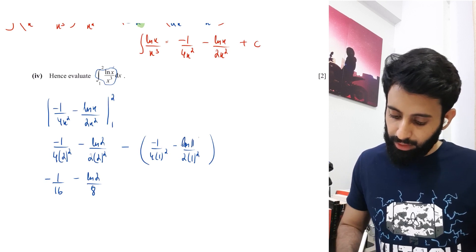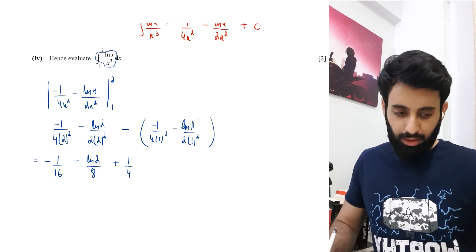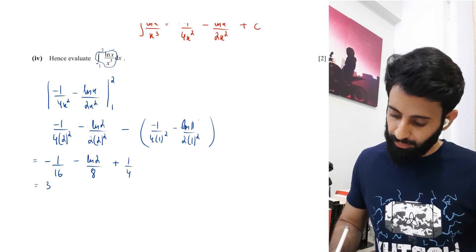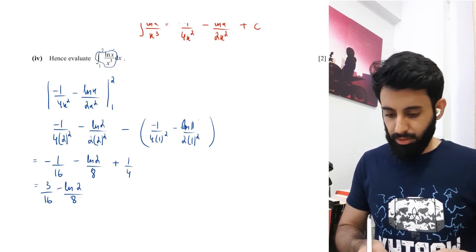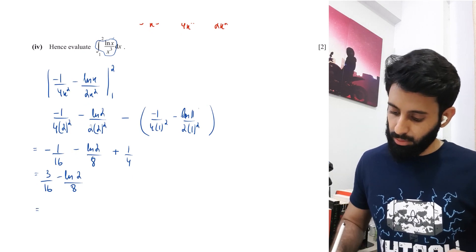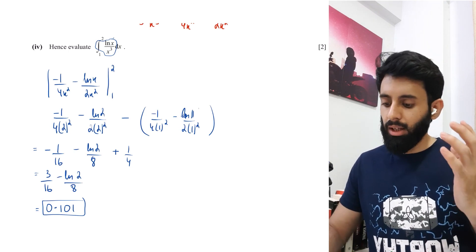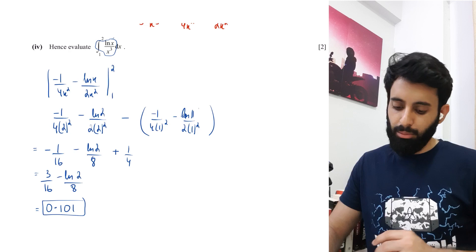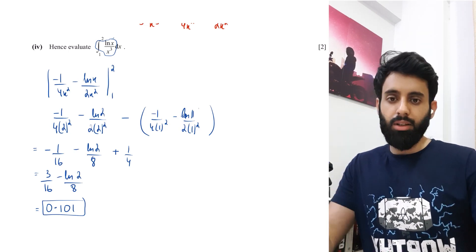Applying the limits: [minus 1/16 minus ln2/8] minus [minus 1/4] = minus 1/16 + 1/4 minus ln2/8 = 3/16 minus ln2/8. Converting to decimal: 3/16 minus ln2/8 ≈ 0.1008, which to three significant figures is 0.101. That's the final answer. A video solving more questions of this type including trigonometric functions will follow.